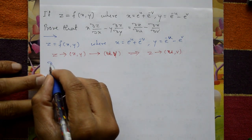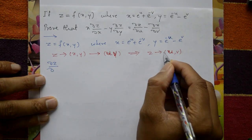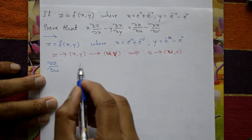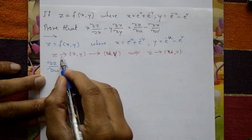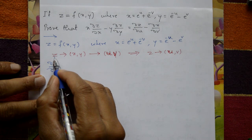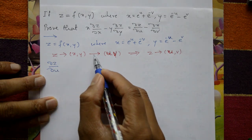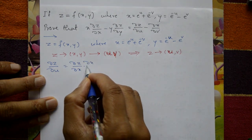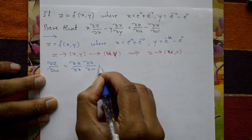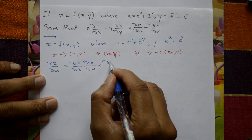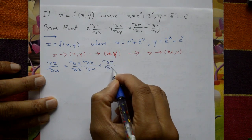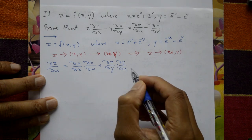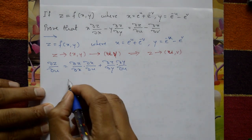dou z by dou u equals dou z by dou x into dou x by dou u plus dou z by dou y into dou y by dou u.